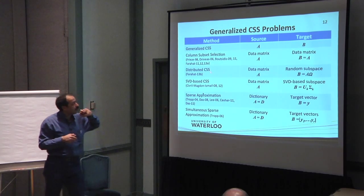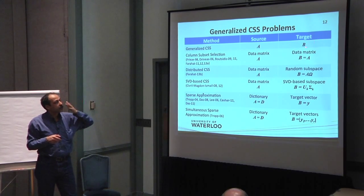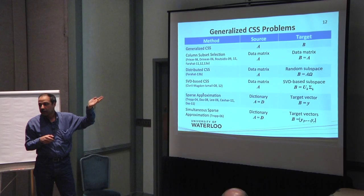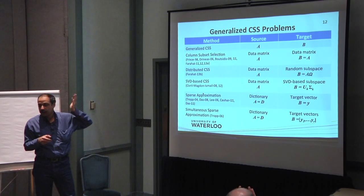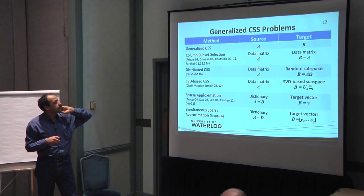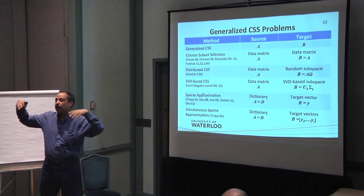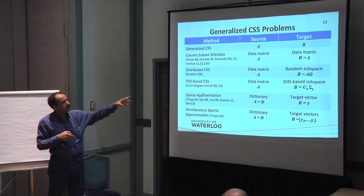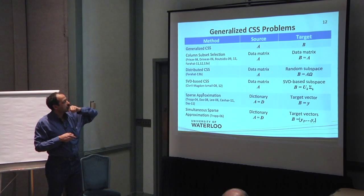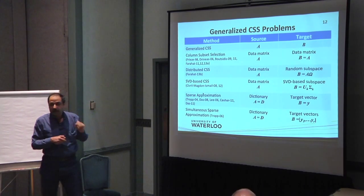And as I promised, I can show you that many existing algorithms can be cast in this form. The original column subset selection trivially is an instance of this general form. If you just choose the target matrix to be the source matrix, column subset selection. And you can use this for distributed column subset selection when the data is distributed over many different machines. You want to, for example, do MapReduce. The target matrix could be a random projection of the original matrix.